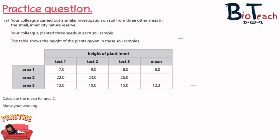The first part of the question asks you to calculate the mean for area number two and show your working. This is quite easy — you need to go 22 plus 24 plus 26, divide that by three, and you should get 24 as the mean.